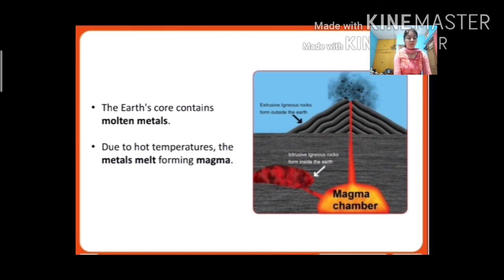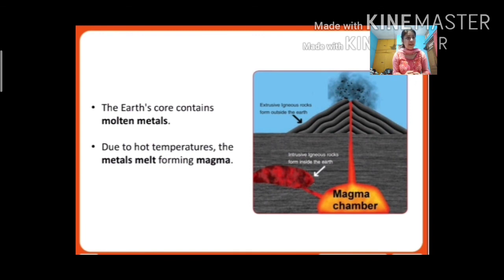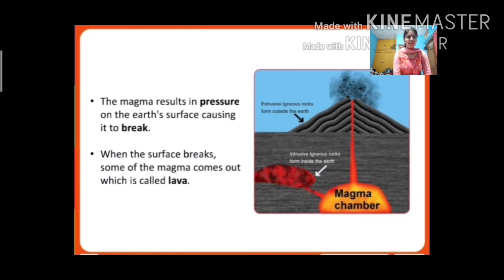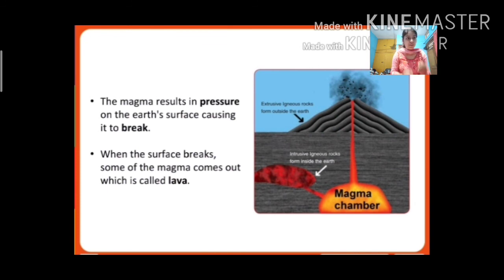Now let us learn about the formation of igneous rocks. The earth's core contains molten metal. Due to the high temperature, the metal melts, forming magma. The magma creates pressure on the earth's surface, causing it to break.